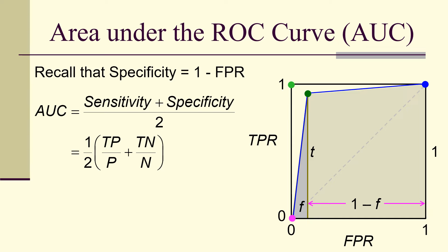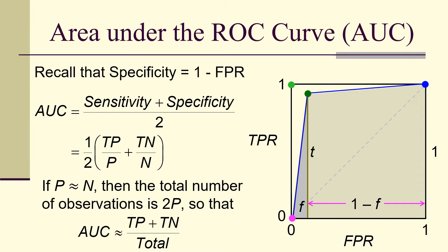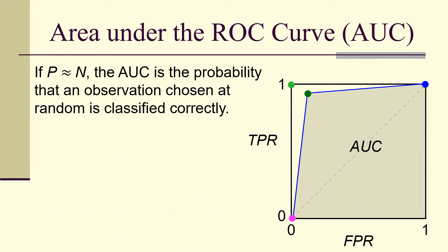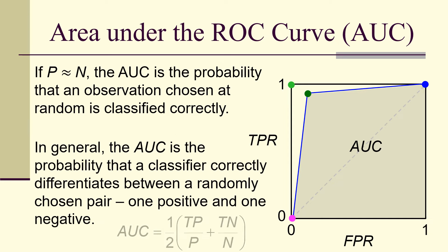The AUC equals one half of (true positives / positives + true negatives / negatives). If the number of positives p approximately equals the number of negatives n, then the total number of observations is approximately 2p, and the area under the curve becomes (TP + TN) / total — which is the probability that a randomly chosen observation is classified correctly. In general, the AUC is the probability that a classifier correctly differentiates between a randomly chosen positive-negative pair.